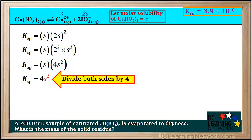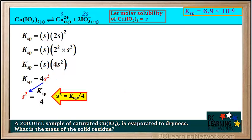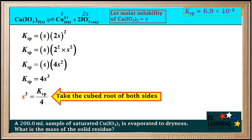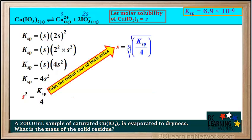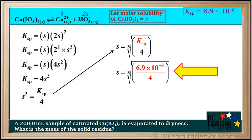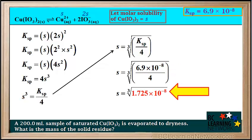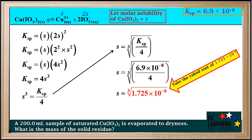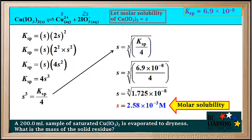We solve for S³ by dividing each side of the equation by 4, so S³ equals Ksp over 4. To solve for S, we take the cubed root of both sides, giving us S equals the cubed root of (Ksp / 4). Substituting Ksp = 6.9 × 10⁻⁸, we get S equals the cubed root of (6.9 × 10⁻⁸ / 4), which equals the cubed root of 1.725 × 10⁻⁸. Taking the cubed root, S equals 2.58 × 10⁻³ molar.